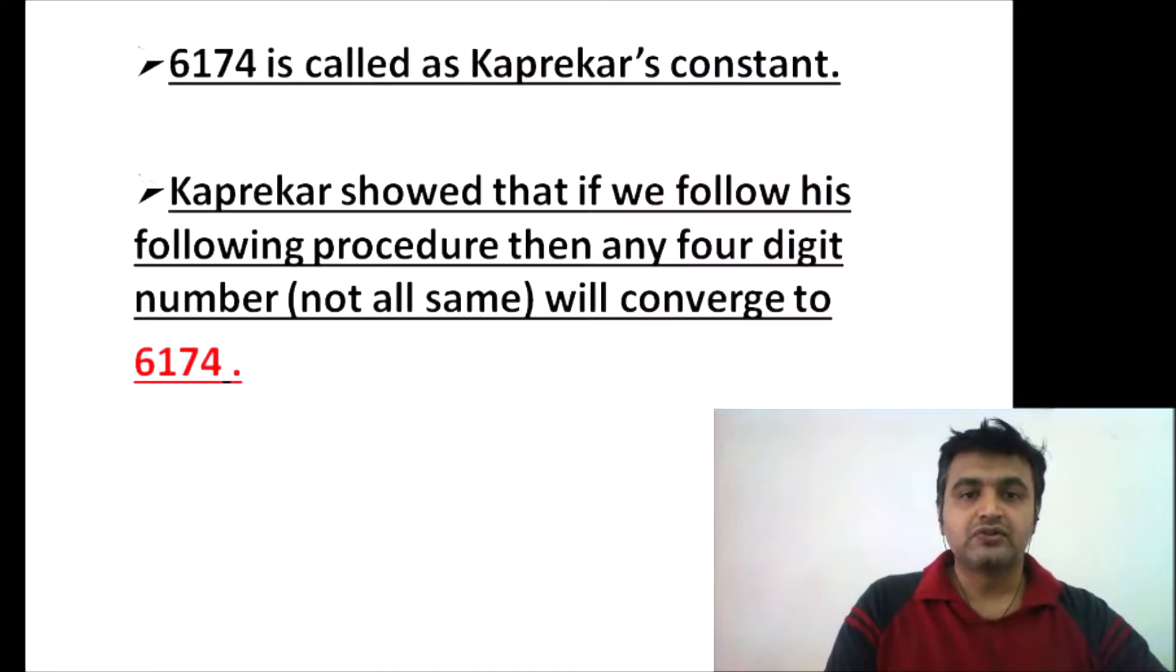6174 is called Kaprekar's constant. What Kaprekar showed is that if you follow this procedure, now called Kaprekar's routine, your four-digit number will always converge to 6174. You take any four-digit number, except all digits should not be the same - at least one number should be different.